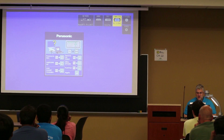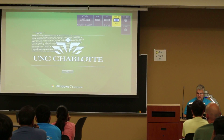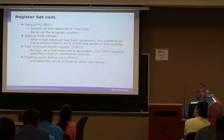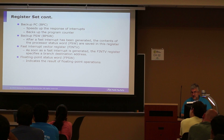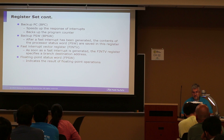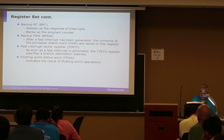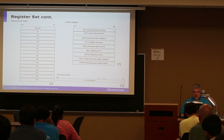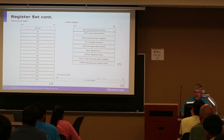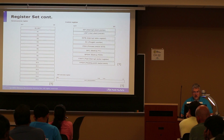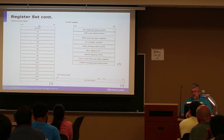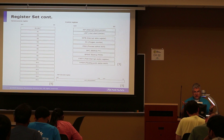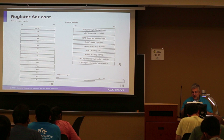We also have a floating point status word telling us the operation of our floating point operations, a backup status word, and a backup program counter. One register of note: R0 is also the stack pointer. The stack pointer is the register that will allow you to call subroutines and return from them — it points to the stack which holds all that information.